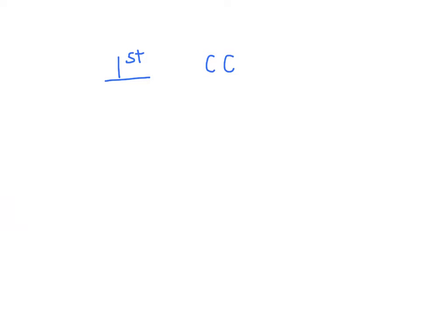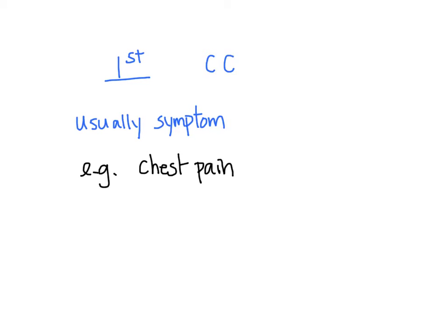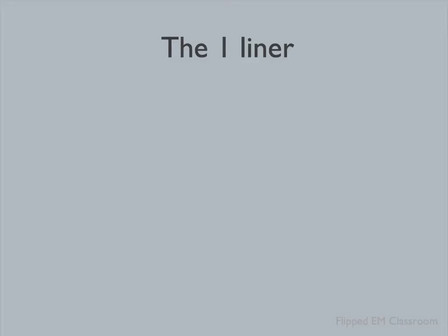First, the chief complaint. It is what the patient is presenting with. It's usually a symptom — it could be chest pain, fever, anxiety, and so on. The second part is the one-liner. The one-liner sets the stage as to who the patient is.